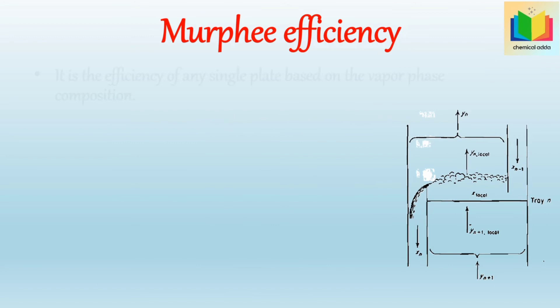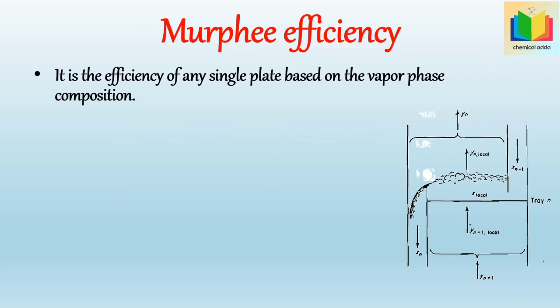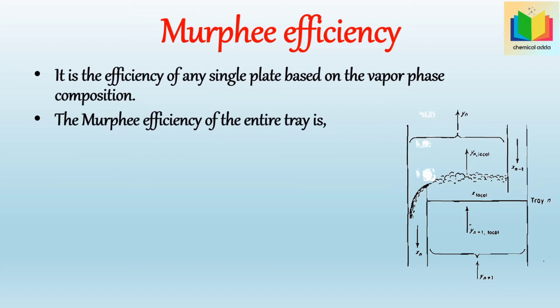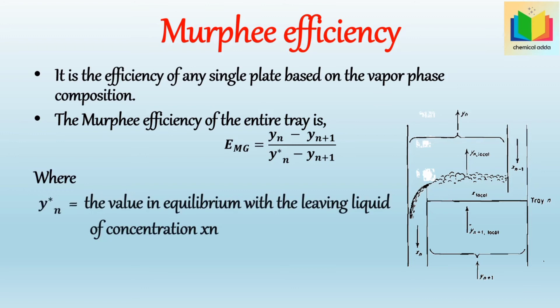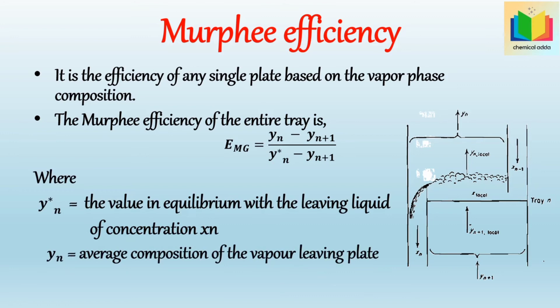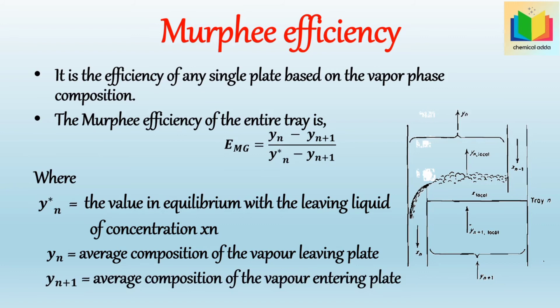What is Murphree efficiency? It is the efficiency of any single plate based on the vapor phase composition. The Murphree efficiency of the entire tray is: E_mg = (y_n − y_{n+1}) / (y*_n − y_{n+1}), where y*_n is the value in equilibrium with the leaving liquid of concentration x_n, y_n is the average composition of the vapor leaving the plate, and y_{n+1} is the average composition of the vapor entering the plate.